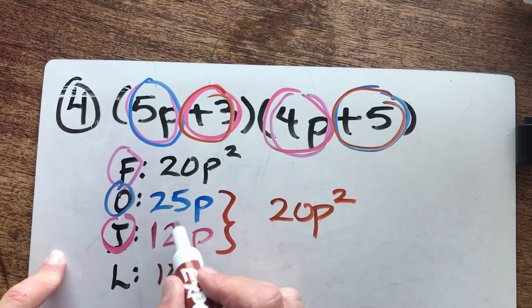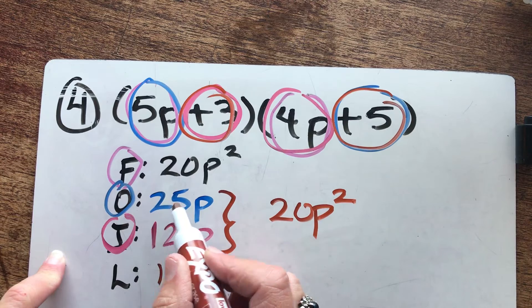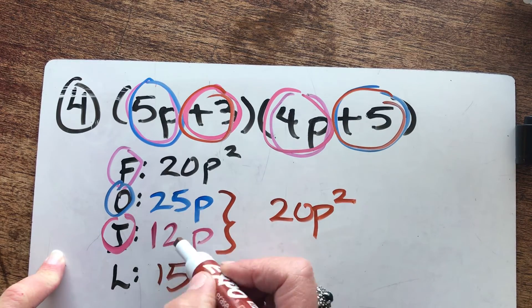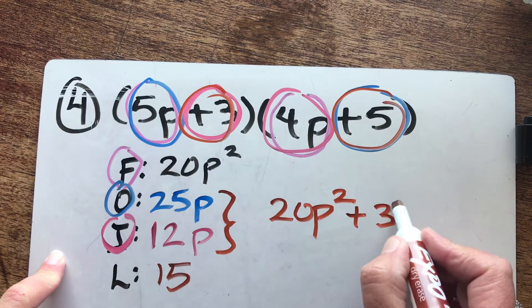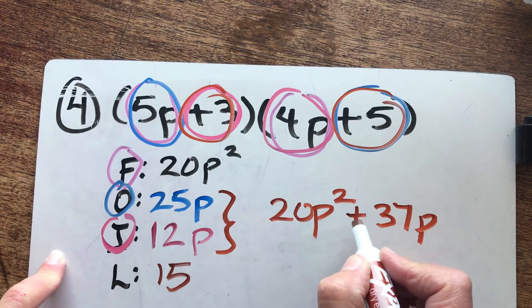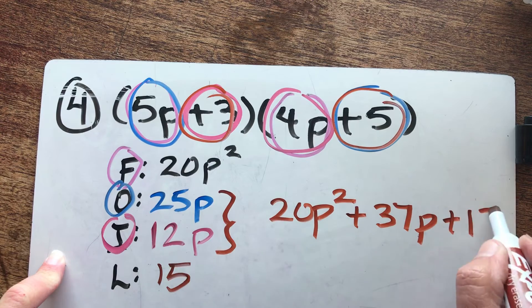20 P squared is my first term. I need to add these. That's a positive 25 P. That's a positive 12. That's 37 P. Don't forget the positive sign.